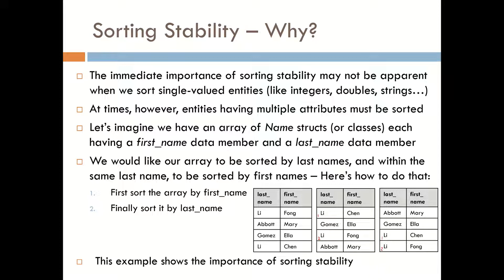In essence, it's what gives us the ability to sort by multiple attributes, if you will, and we can do this by not only two attributes, but by n number of attributes. And it is this that we're chasing after when we look at the stability of sorting algorithms.